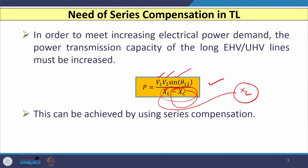After the incorporation of compensation devices — if we use a series capacitor or a TCSC (thyristorized controlled series capacitor) — then in the denominator instead of XL, we have XL minus XC, where XC is the capacitive reactance of the series capacitor. This allows us to increase the power transmitted by reducing the denominator. So if we wish to transmit more power, we must incorporate series compensation, making the line a series compensated transmission line.